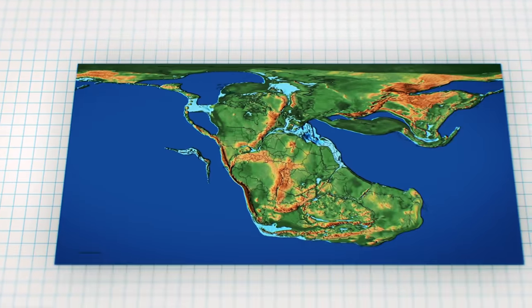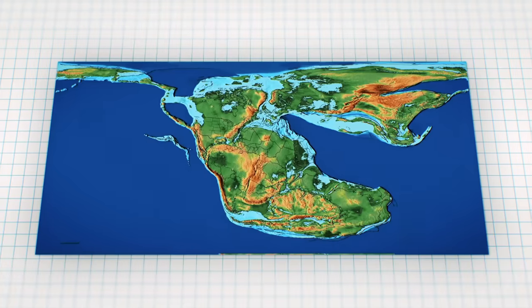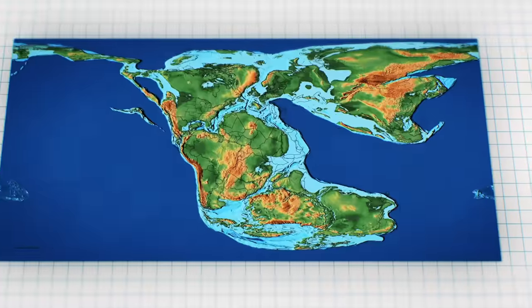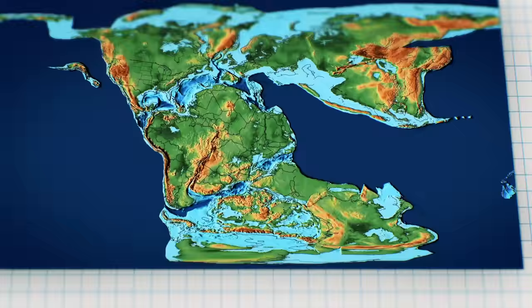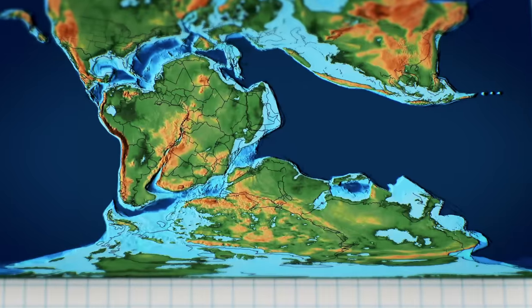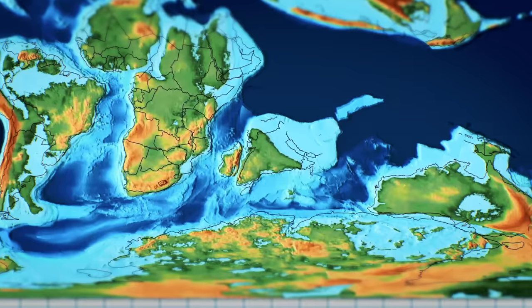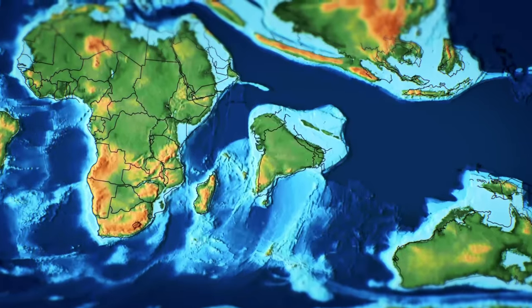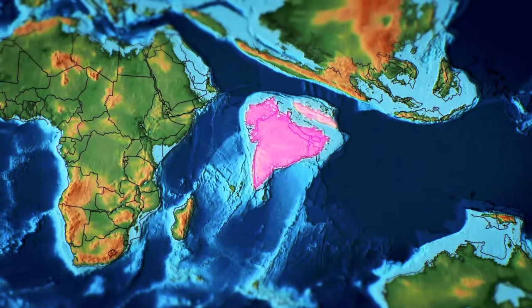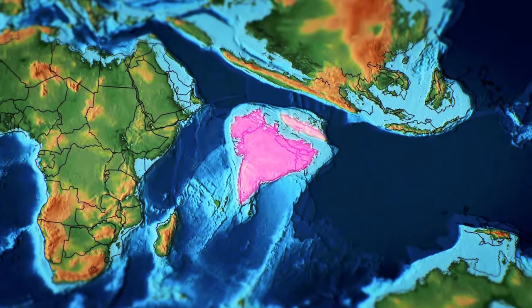A similar process of recombining realms can be found when looking at India. You see, India broke from Gondwana approximately 130 million years ago, and spent 80 million years adrift in the middle of what would become the Indian Ocean. Similar to South America, this isolation bred a very unique biota, and soon enough a distinct Indian realm came about, one derived from the greater tropical realm.